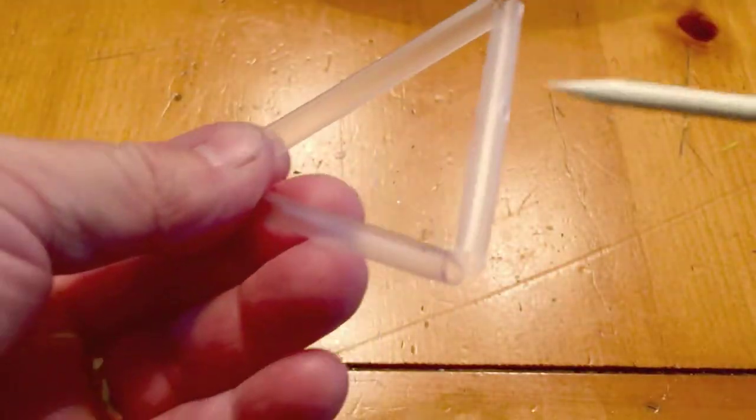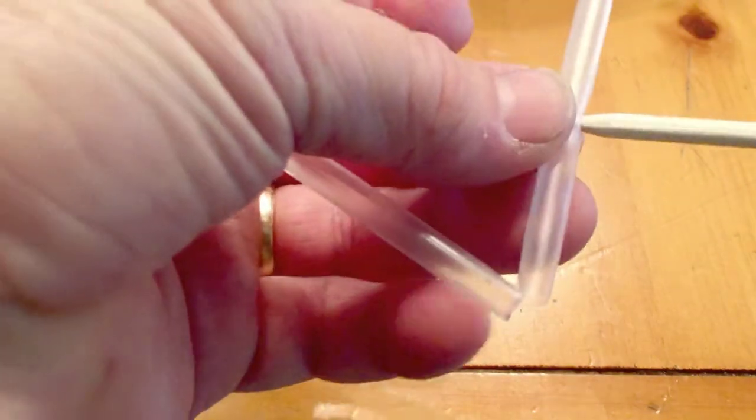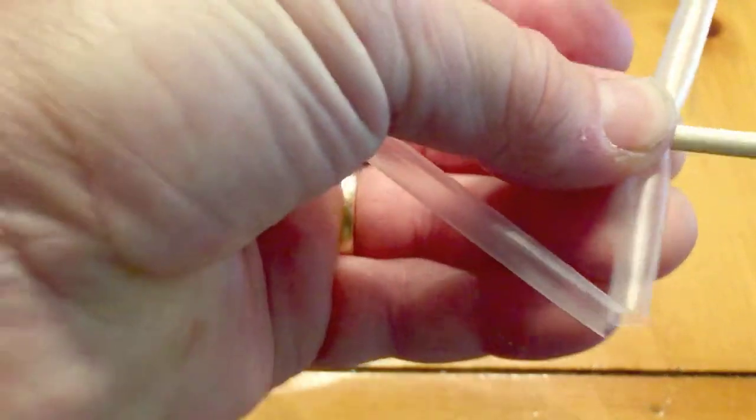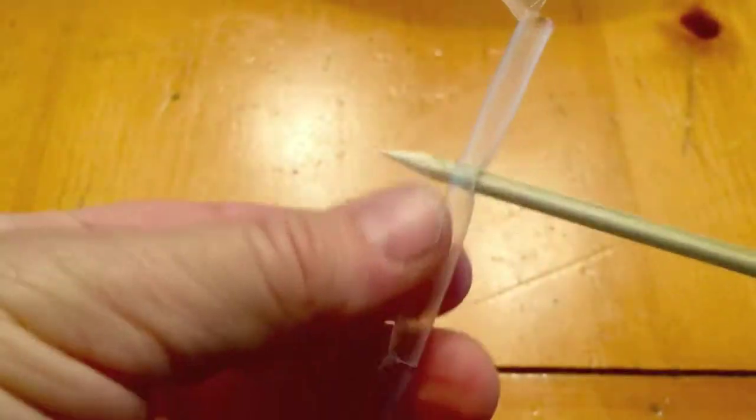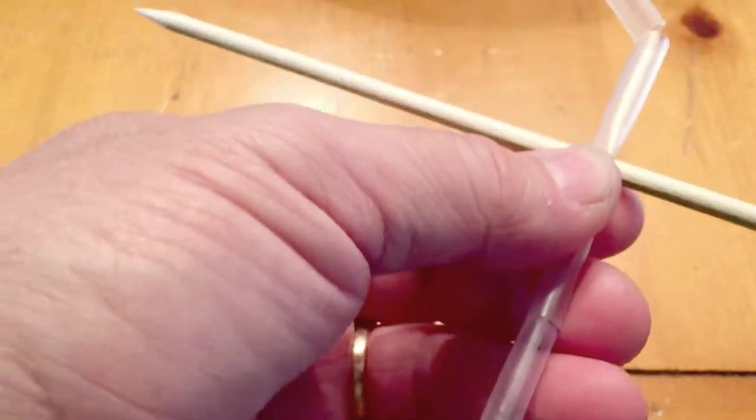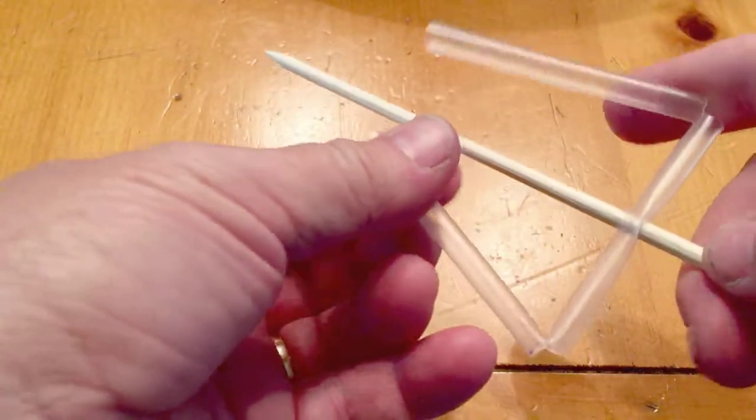Then take your skewer and in the middle piece of the straw push the skewer all the way through both sides of the straw. Be very careful because the side of the skewer is a little sharp and have adult supervision there and push it all the way through and then it'll hook up just like this.